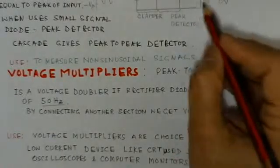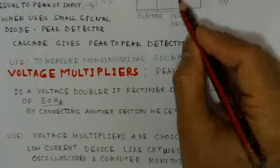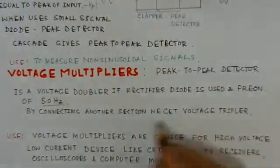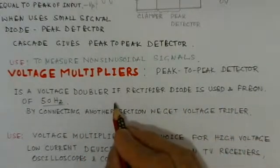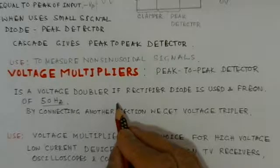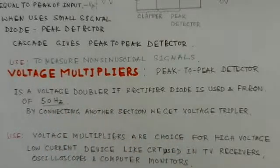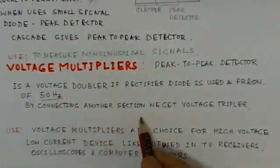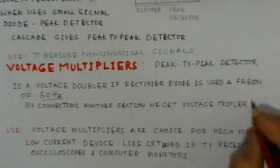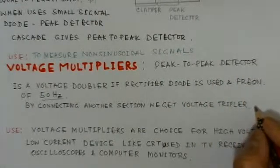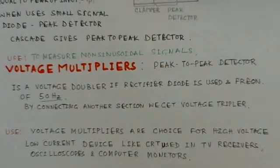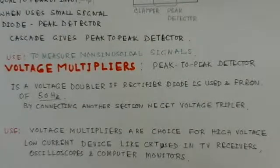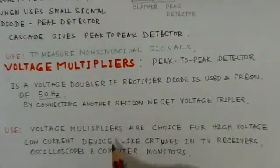If instead of the diode which we have used here, a small signal diode, instead of small signal diode here we can use a rectifier diode and use the frequency instead of high frequency we use a main frequency like 50 hertz. Then it will become a doubler circuit. By connecting another section to this circuit we can make a tripler and so on. So these are the simple voltage multiplier circuits.